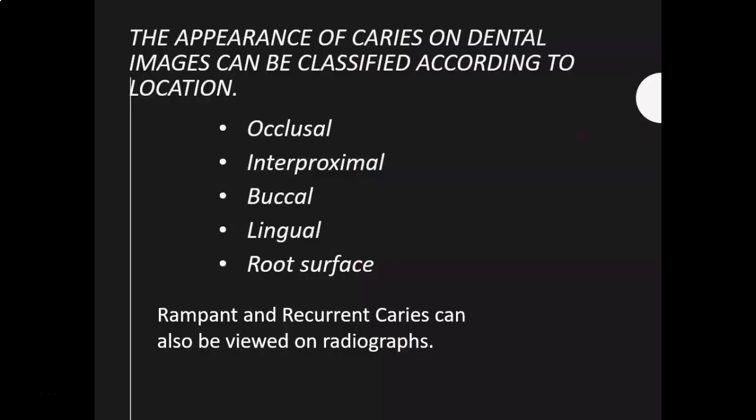The appearance of caries on dental images can be classified according to their location. They can be occlusal caries, interproximal caries, buccal or lingual caries, or root surface caries. They can also be rampant caries or recurrent caries, and all these types can be viewed on a radiograph.